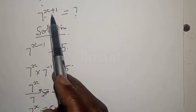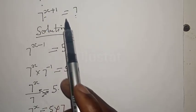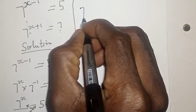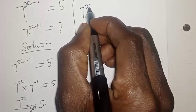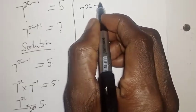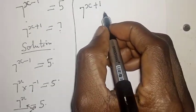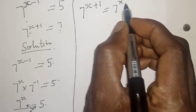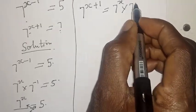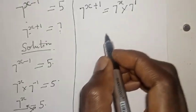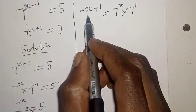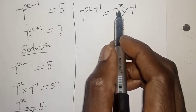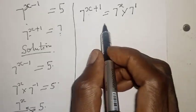5 times 7 is 35. From the question we have 7 raised to power x plus 1 as unknown. This can be expressed as 7 raised to power x multiplied by 7 raised to power 1, since x plus 1 = x + 1.